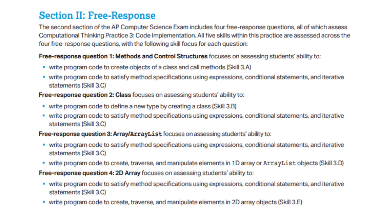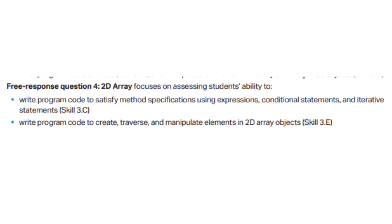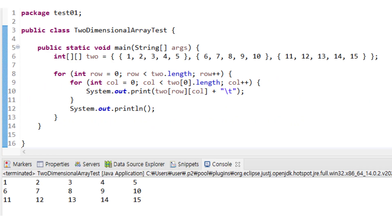For example, LEQ choice 1 will be from 1200 to 1750, and choice 2 will be between 1450 and 1900. For AP Computer Science A, you're told different programming skills needed for each FRQ — for example, FRQ 4 requires you to create, traverse, and manipulate elements in 2D array objects. This means the last FRQ requires extensive knowledge on 2D arrays, and this is actually the FRQ that students struggle with the most.